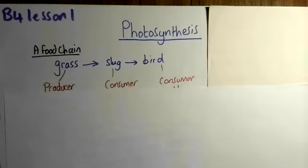We can give these organisms some terms. So grass is called a producer. The slug and the bird are both called consumers. Let's look at why this is.